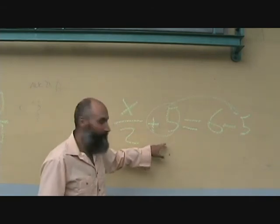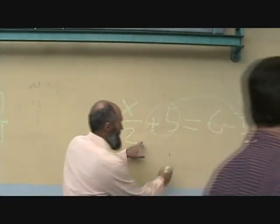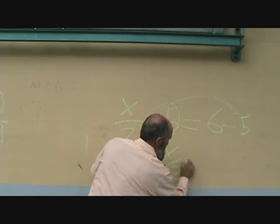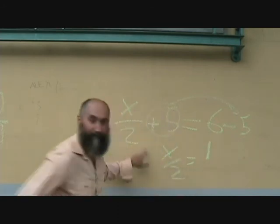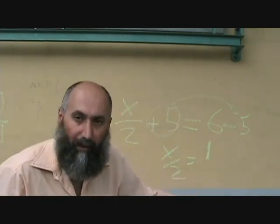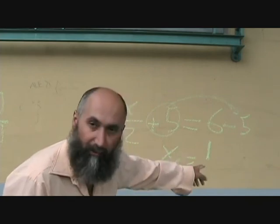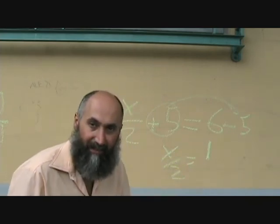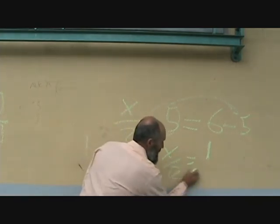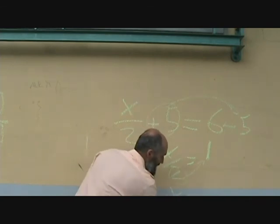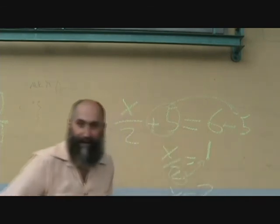On this side, you moved the 5 over already, so you got x over 2. So you got x over 2 is equal to 1, and now you can just cross-multiply up. Now this is as simple as this is going to get. So this guy just goes up here. So your final answer is x is equal to 2.